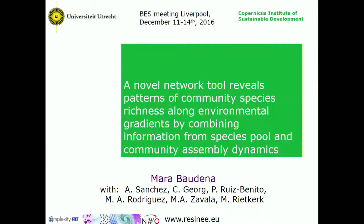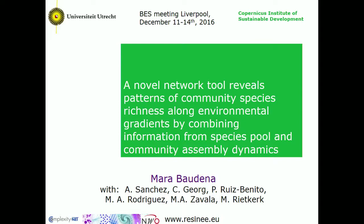I'm here to talk about work developed with a group of physicists, ecologists, and one economist. We adapted a network method originally used in economics and translated it into ecology to study species richness patterns. The method is applied to plants at large spatial extent, keeping data at community scale without geographical upscaling.